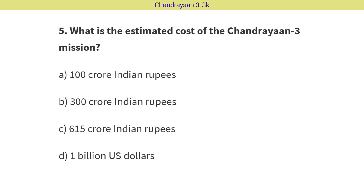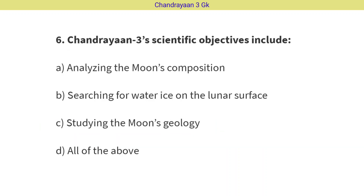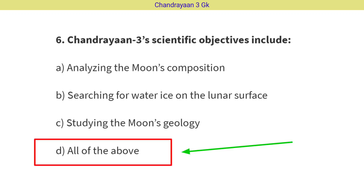Question No. 5: What is the estimated cost of the Chandrayaan-3 mission? The correct answer is Option C, i.e. 615 crore Indian rupees. Question No. 6: Chandrayaan-3 scientific objectives included? The correct answer is Option D, i.e. All of the above — analyzing the moon composition, searching for water-ice on the lunar surface, and studying the moon's geology.